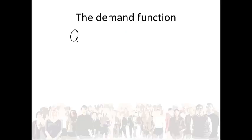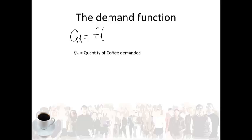So what type of things will influence the quantity of coffee that Sally will buy? We say quantity demanded is a function of certain things. This is how we write mathematically what factors have an influence on Sally's demand for coffee. QD stands for the quantity of coffee demanded. One of the things that will surely influence the quantity of coffee that Sally will buy is the price of coffee, so the quantity of coffee demanded is influenced by the price of coffee.